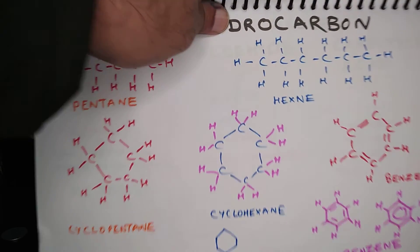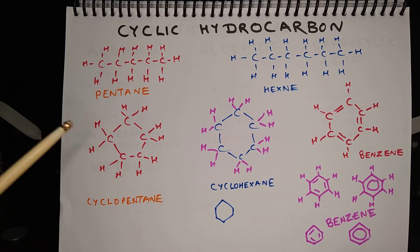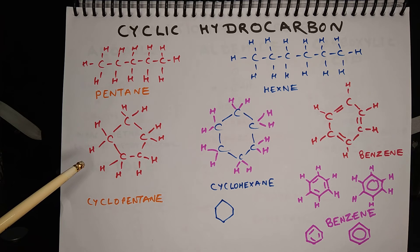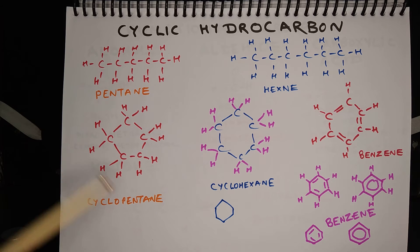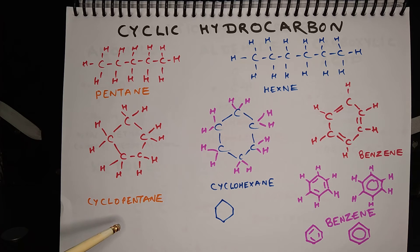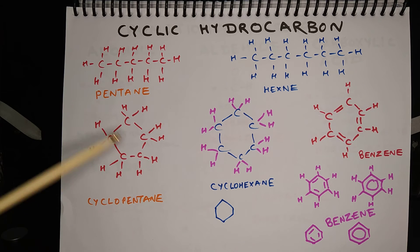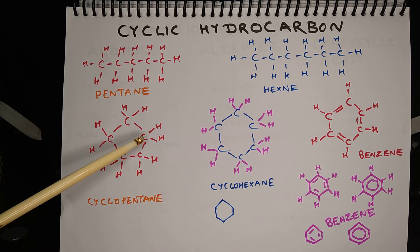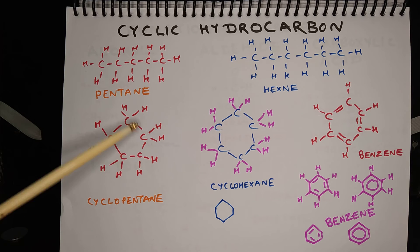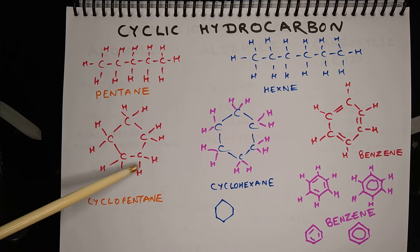Cyclic hydrocarbons. Till now I have discussed about structures in which carbon makes a linear chain. But sometimes in some compounds, carbon makes a ring. An organic compound with a ring of carbon is called a cyclic hydrocarbon. Let us take this example — this is pentane, having a linear chain. This is also pentane, but here instead of a linear chain, we get a ring of carbon atoms, so this becomes cyclopentane.